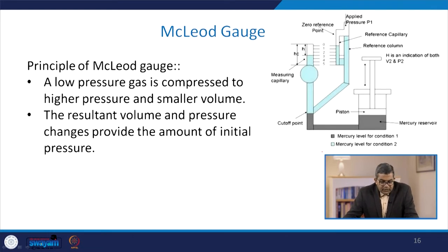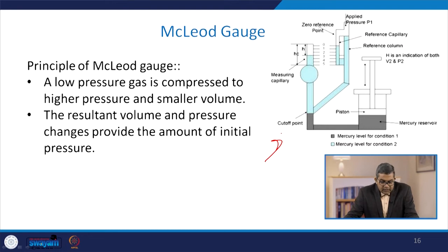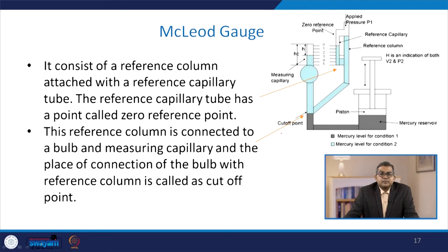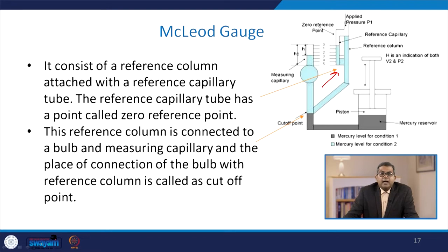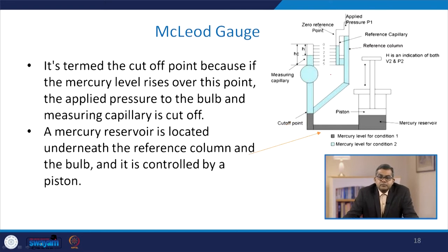The principle of the Macleod gauge is that a low-pressure gas is compressed to a high pressure and smaller volume; the resultant volume and pressure changes provide the amount of initial pressure. It consists of a reference column attached to a reference capillary tube with a zero reference point. The reference column is connected to a bulb and measuring capillary; the junction of the bulb with the reference column is called the cutoff point, because if the mercury level rises over this point, the applied pressure to the bulb and measuring capillary is cut off.